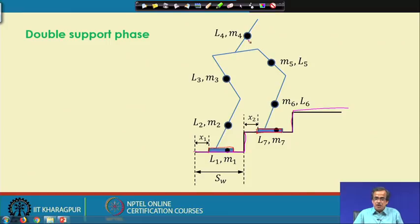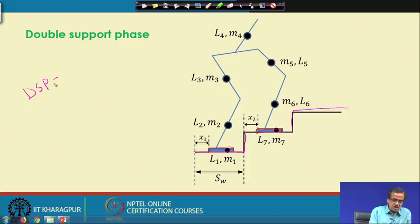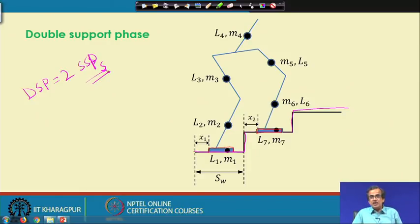For the purpose of analysis of the double support phase, we assume it consists of two single support phases. We have already seen how to carry out the analysis for the single support phase. So the DSP is assumed to be consisting of two SSPs, and for each SSP, we carry out dynamic analysis to find the ZMP point.